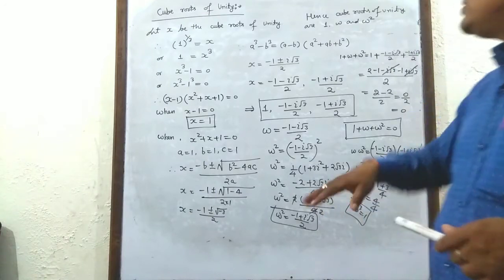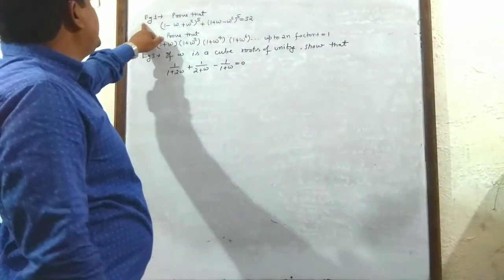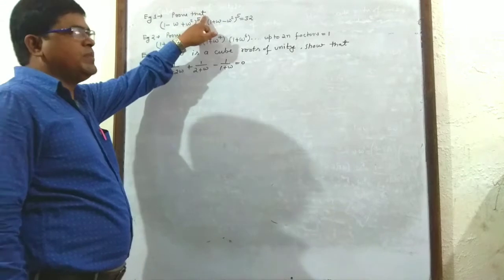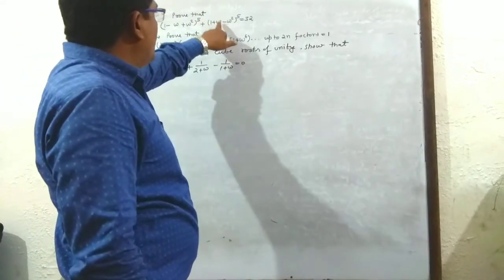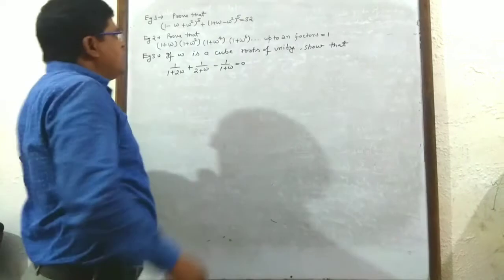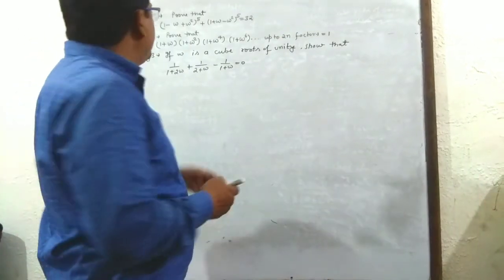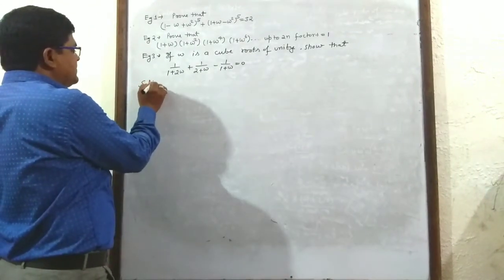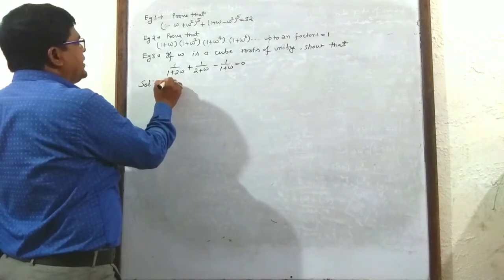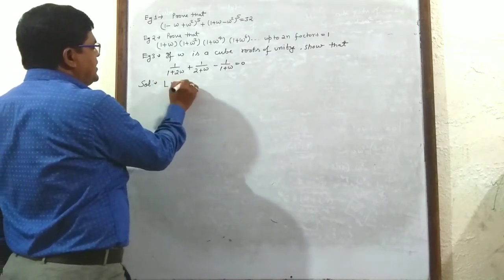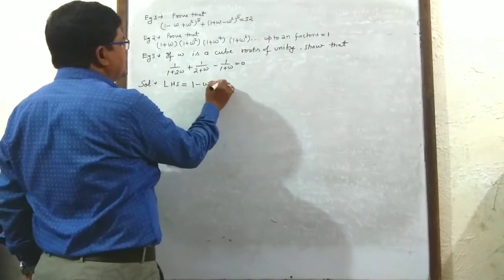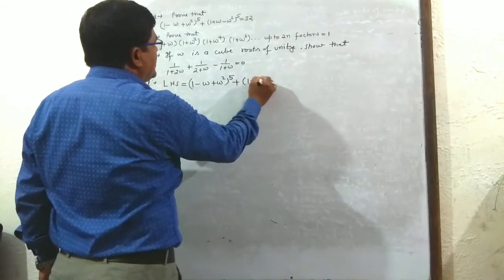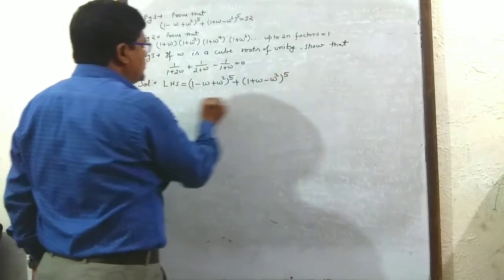With these two properties — 1 + ω + ω² = 0 and ω³ = 1 — we can solve many questions. Example 1: Prove that (1 - ω + ω²)⁵ + (1 + ω - ω²)⁵ = 32, where ω is the cube root of unity. Left hand side = (1 - ω + ω²)⁵ + (1 + ω - ω²)⁵.